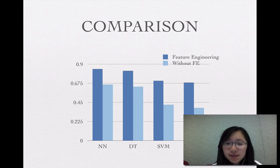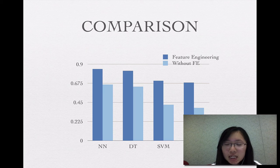I summarize all the work I have done by this chart. From this chart, we can see that the accuracy of feature engineering is higher than the accuracy without feature engineering. And also, the accuracy of neural network and decision tree is higher than support vector machine and the KNN model.